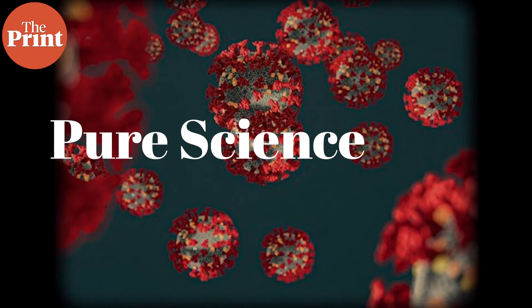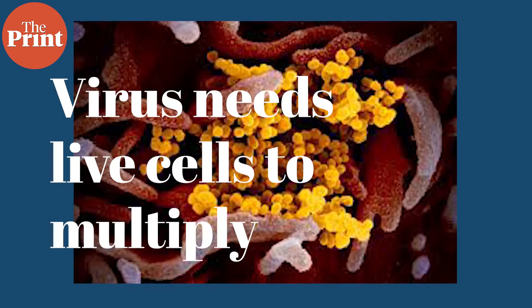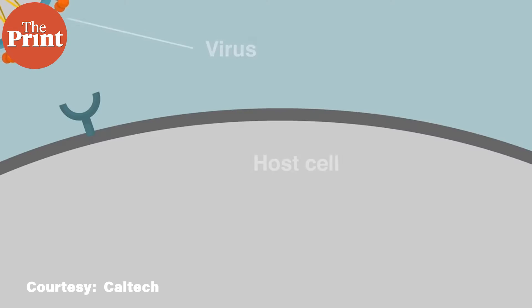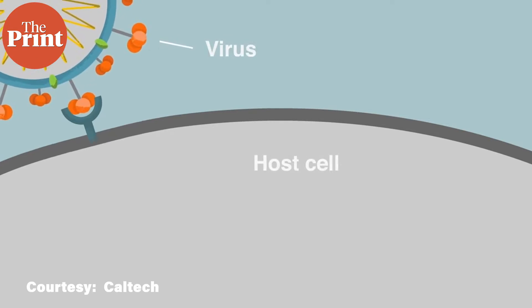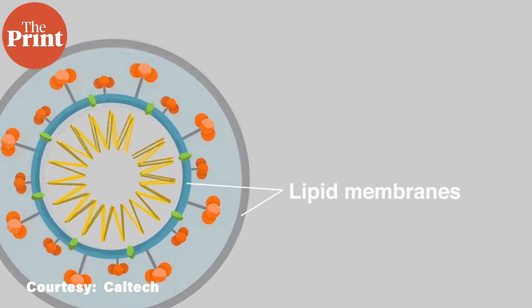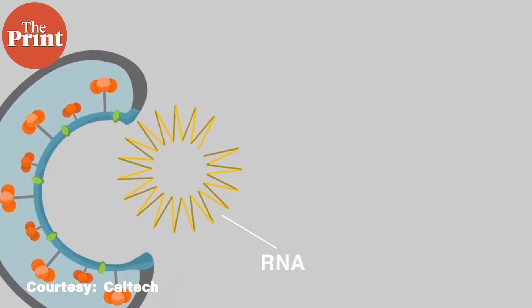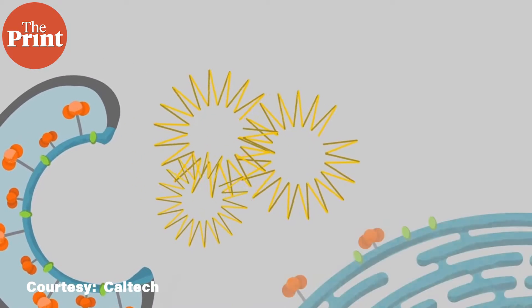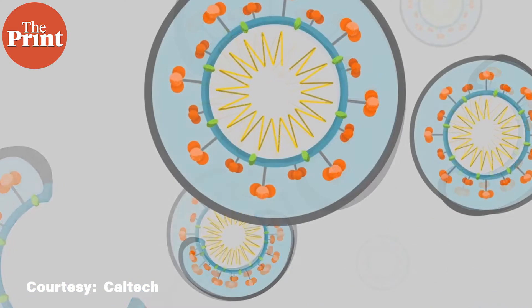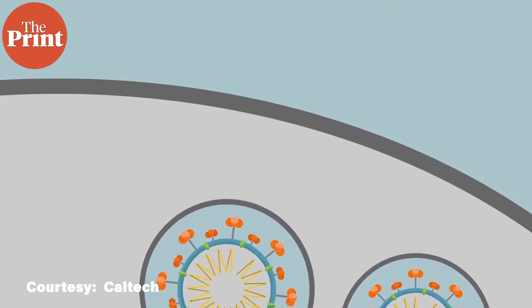This is Mohana Basu and you are watching Pure Science. One of the first things we need to understand about a virus is that it needs a live cell to multiply. This is different from bacteria, which can actually multiply almost anywhere as long as the conditions are right. After entering a healthy cell, the virus takes over its internal systems and uses them to produce biomolecules needed to multiply. Eventually, the infected cell bursts open, releasing the virus, which then infects neighboring cells — that is how the virus spreads in the body.